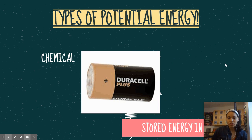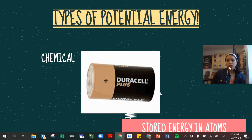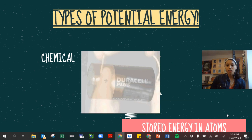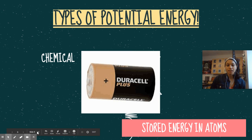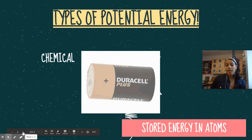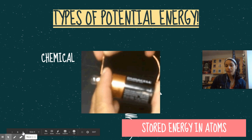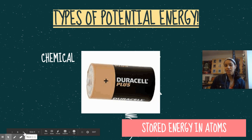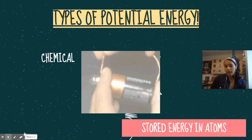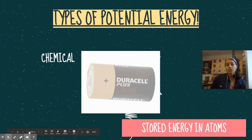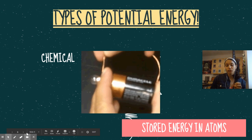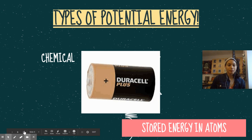Chemical energy is stored energy in atoms. As an example here, this is the stored energy within a battery. A battery has stored energy because it doesn't constantly push out electrons all day. It has to be connected to something, like a wire, so it can distribute electrons and shed its power.